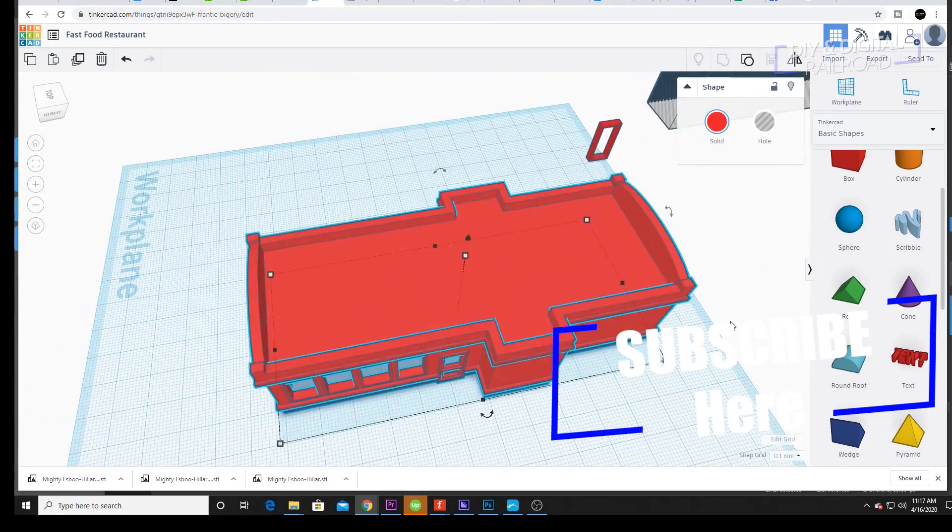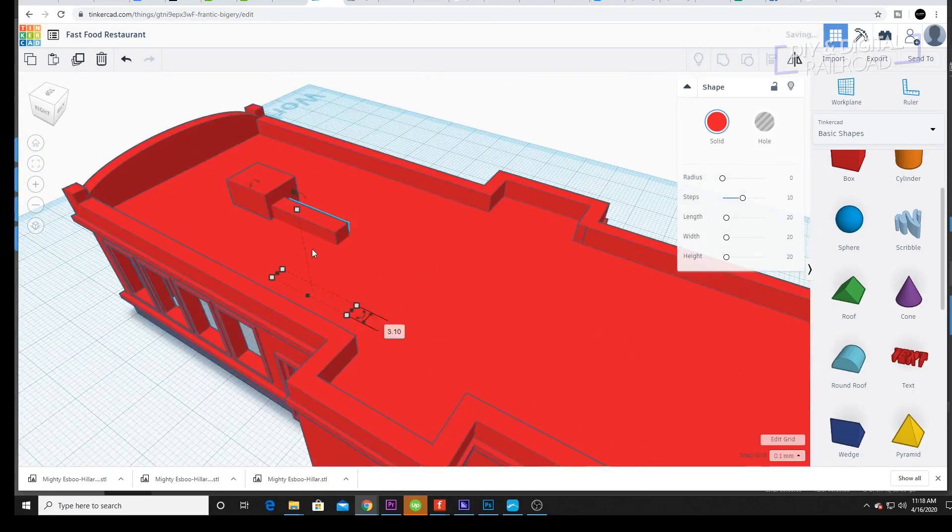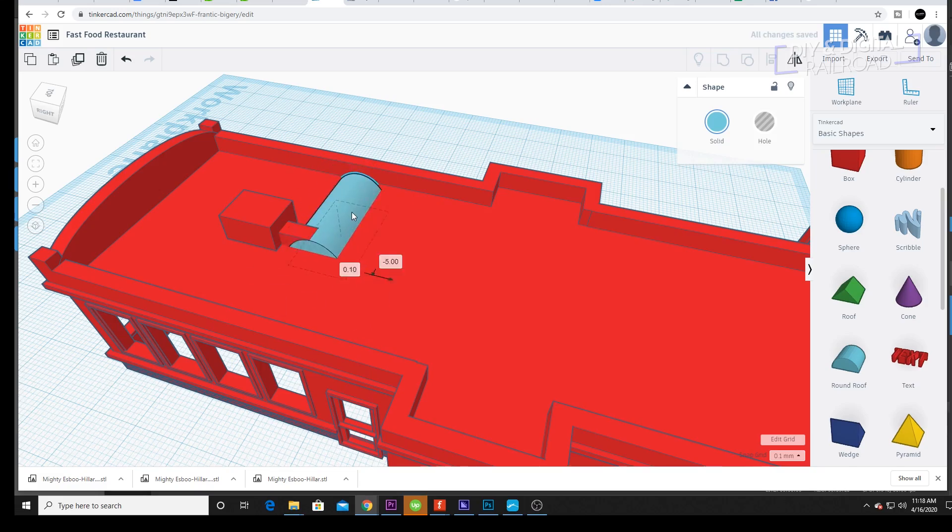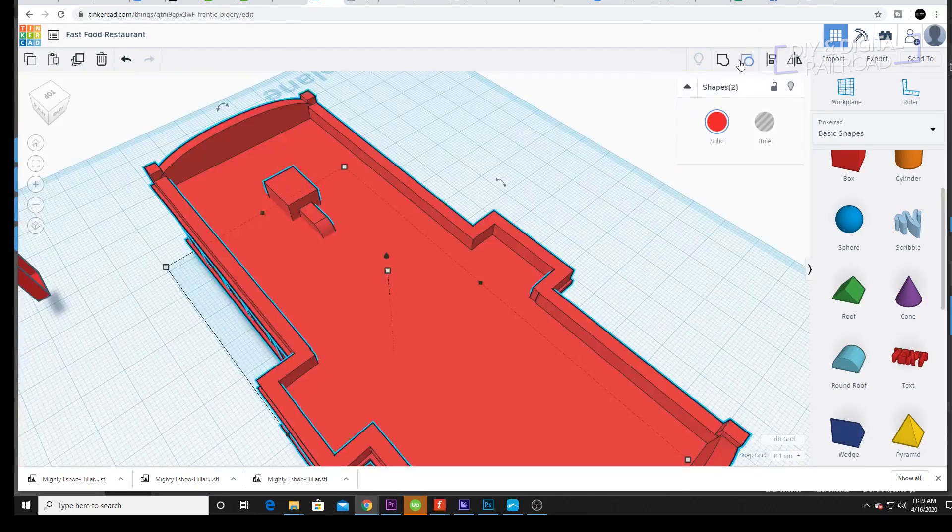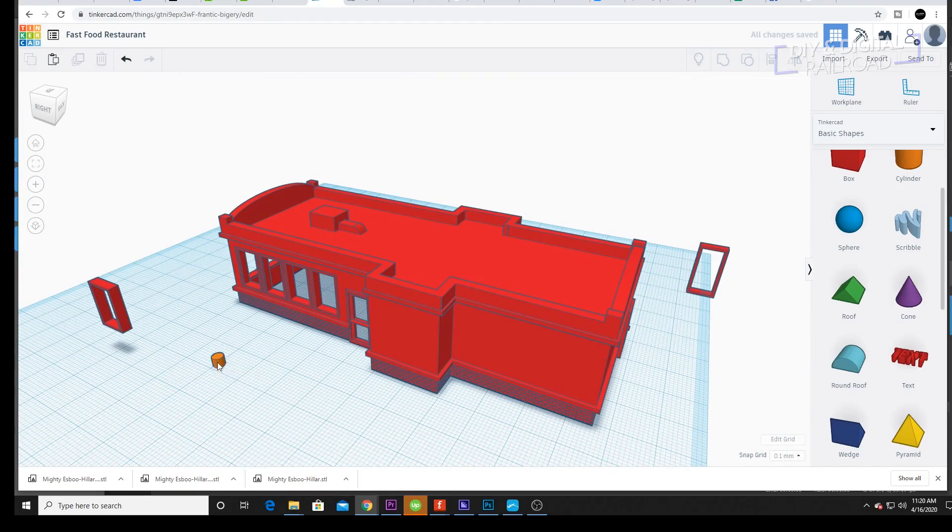Next it's time for a few little roof details. I decided to put one little main air conditioner right here. And then I created a few vents for the kitchen area. Now I'm not basing this off anything. I'm basically going on what looks good.